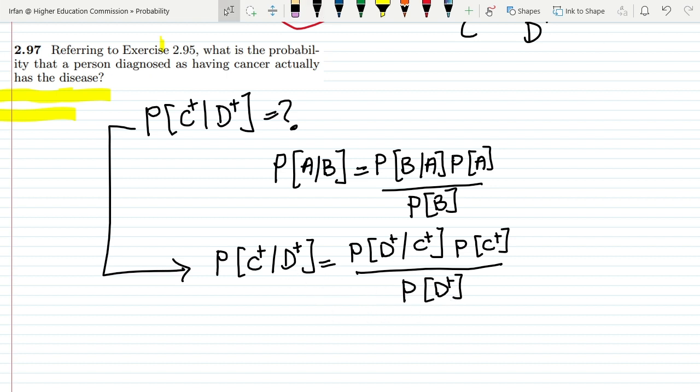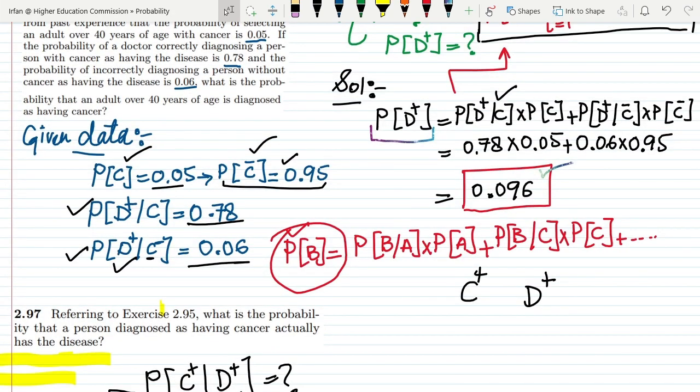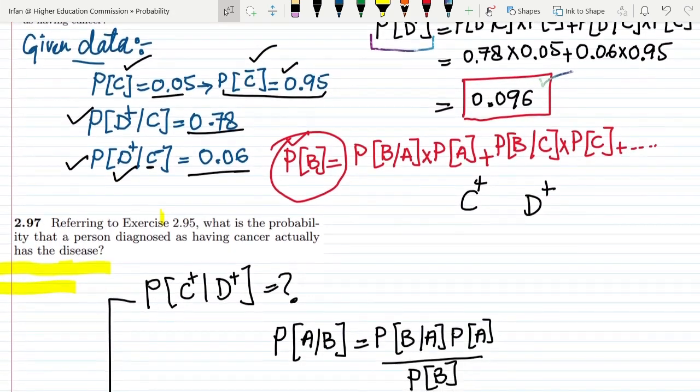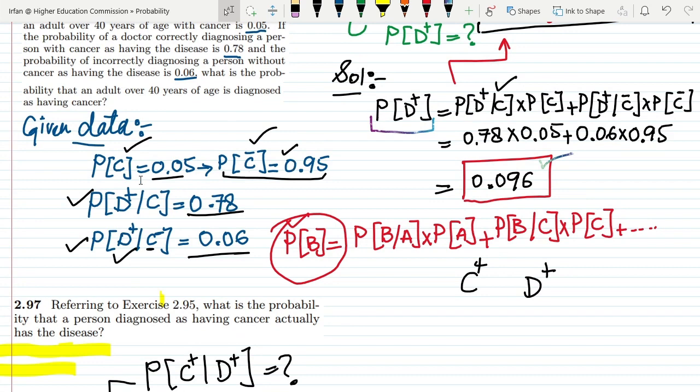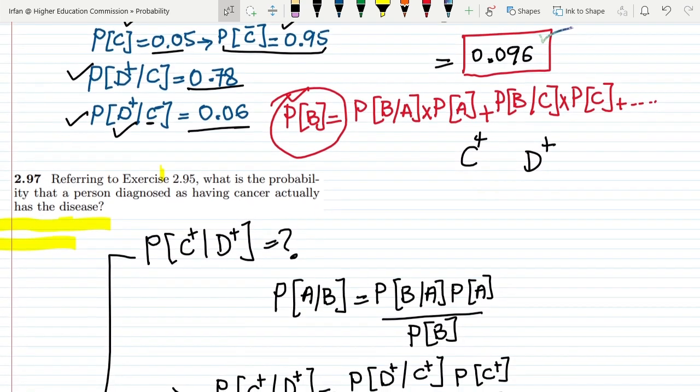Now looking back to the previous question do we have all this stuff. We can very clearly see that here we have probability of C that is 0.05, probability of D plus given that C is positive that is 0.78, and also we have found out here probability of D plus that is 0.096.